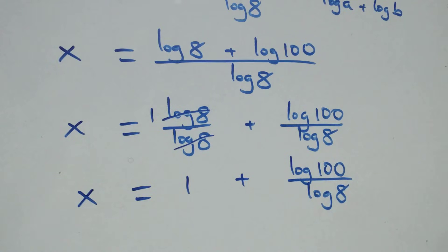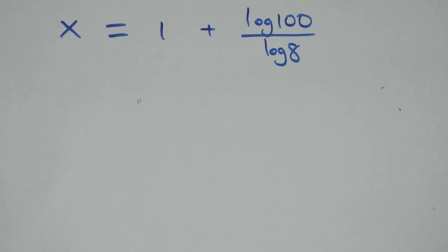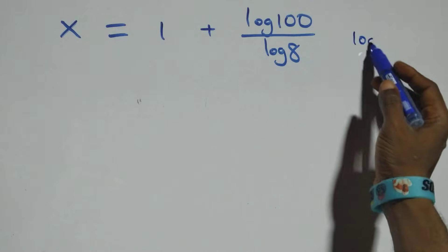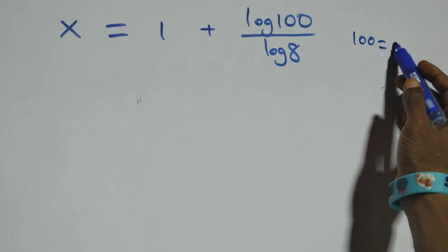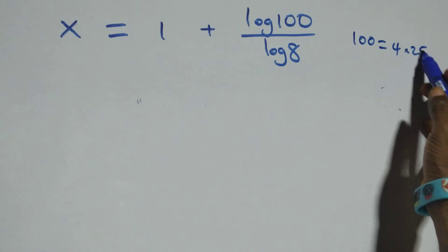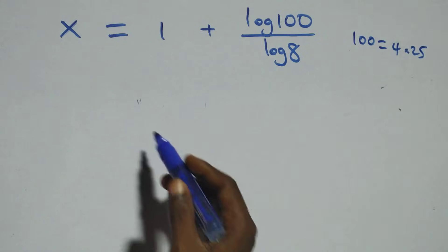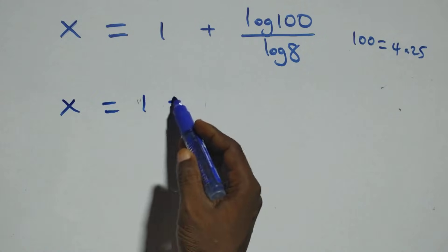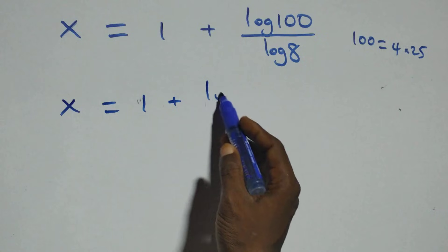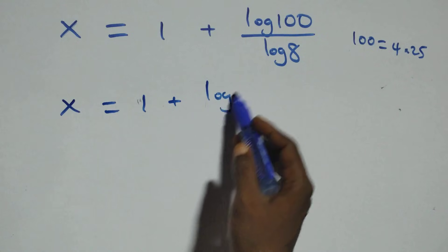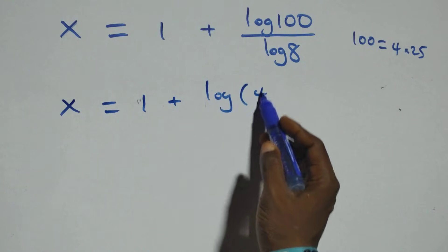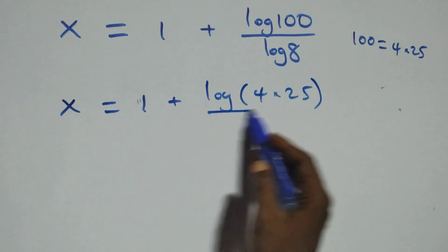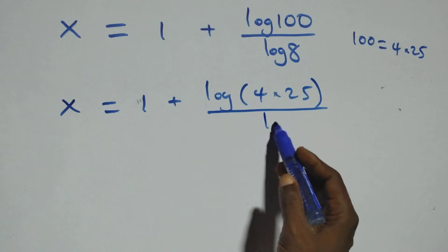Then in the next step, we can also write 100 as 4 times 25. So all we have becomes x equals to 1 plus log(4 × 25) over log 8.